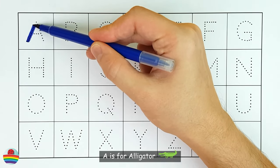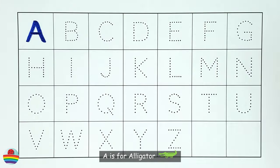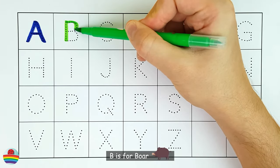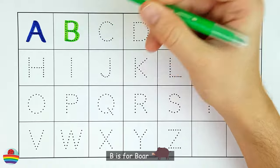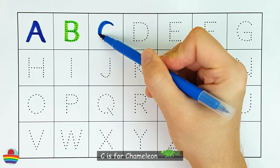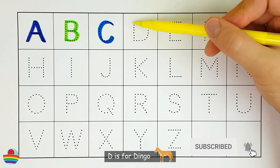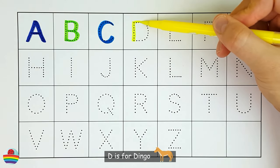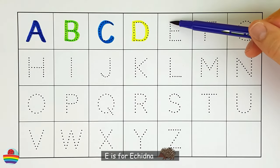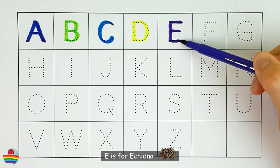A. A is for alligator. A. B. B is for boar. B. C. C is for chameleon. C. D. D is for dingo. D. E. E is for echidna. E.